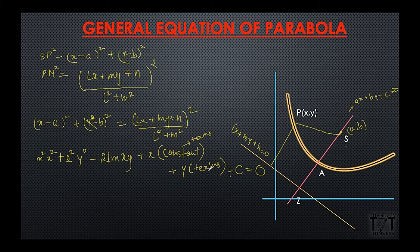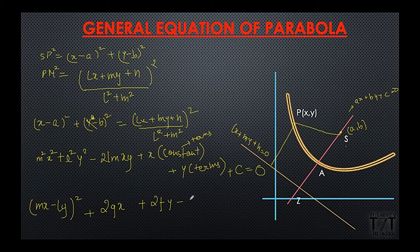So in general what we get, the general equation of parabola will be of the form mx minus ly whole square as the first three term says, and then the x and the terms which we write over here will be named as 2gx and the terms related to y will be named as 2fy plus c is equal to 0.